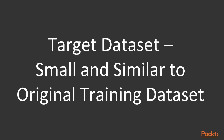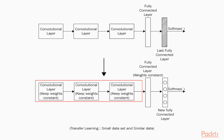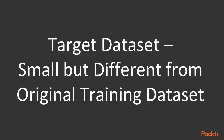Now let's walk through each case in detail. First, we will look at the most common case where the target dataset is small and similar to the original training dataset. In this case, as you can observe in the diagram, the last fully connected layer is replaced with a new fully connected layer that matches the number of classes of the target dataset. Then the old weights are initialized with randomized weights, and the network is trained to update the weights of the new fully connected layer.